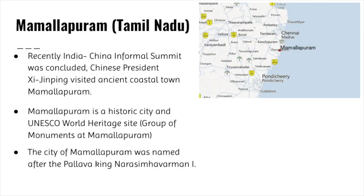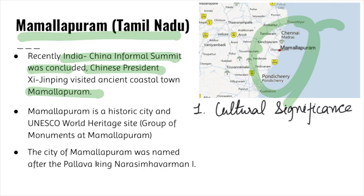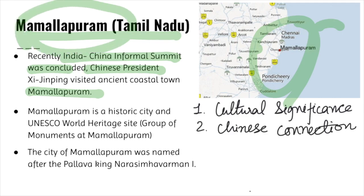Now we'll see about Mahabalipuram, which is located on the Coromandel coast of the Bay of Bengal in Tamil Nadu. Recently it was in news because the 2nd India-China informal summit was concluded when the Chinese president visited the town. We have to look for two important things: the cultural significance of Mahabalipuram and the Chinese connection.